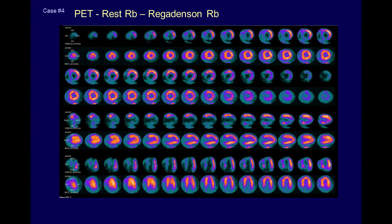This is a PET scan. The images look just the same except there are a lot more of them because we cut it into far smaller segments — the slice thickness is a lot thinner so you see a lot more images. This is a 370-pound man and these are really nice images in a really big person accomplished in 20 minutes. You can see a very severe defect involving the entire septum, apical anterior septum, and apex that totally normalizes at rest. In addition, the whole inferior wall is very severely reduced and normalizes at rest — a really good example of very severe ischemia involving the apex, anterior septum, and entire inferior wall.